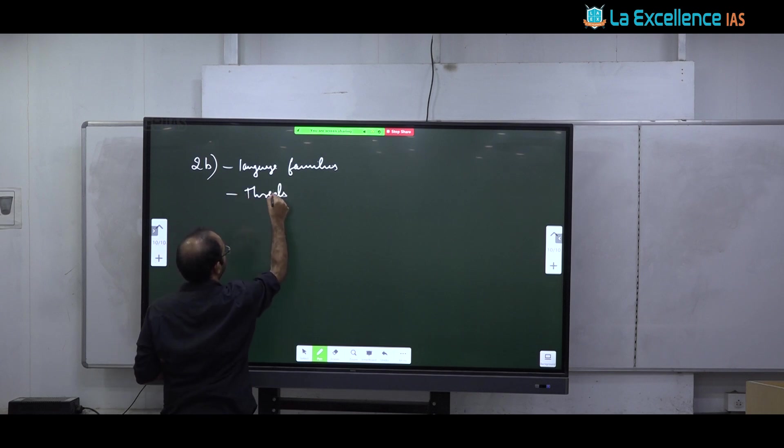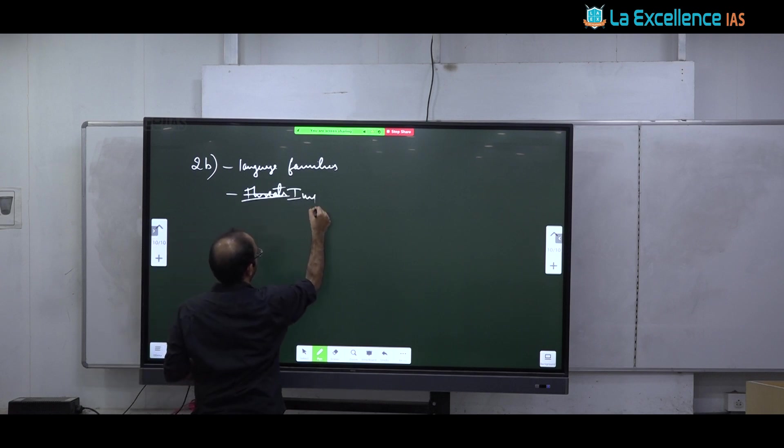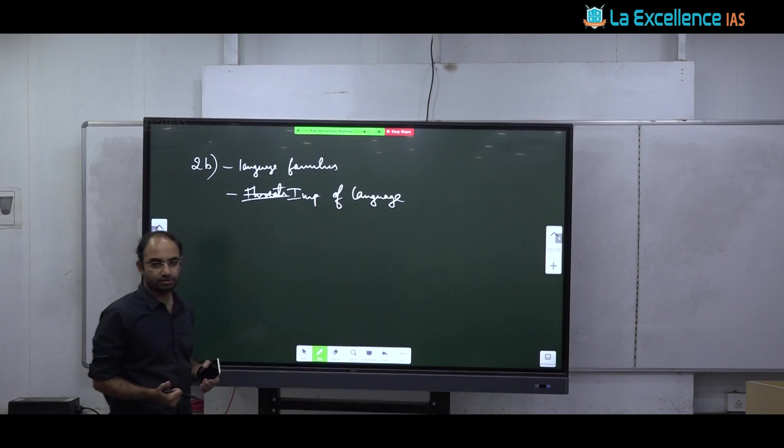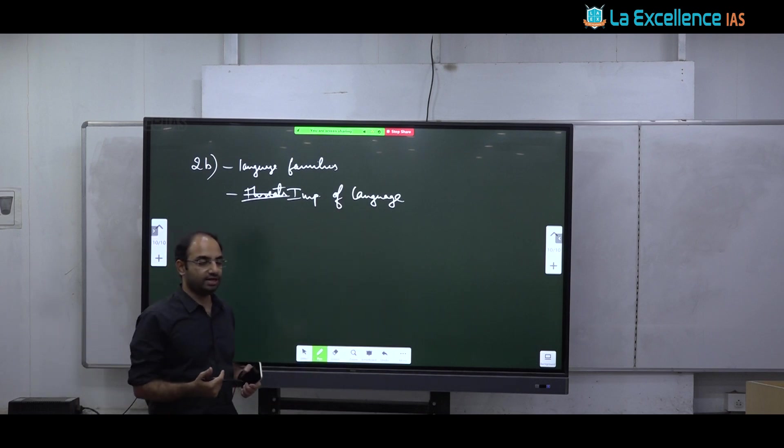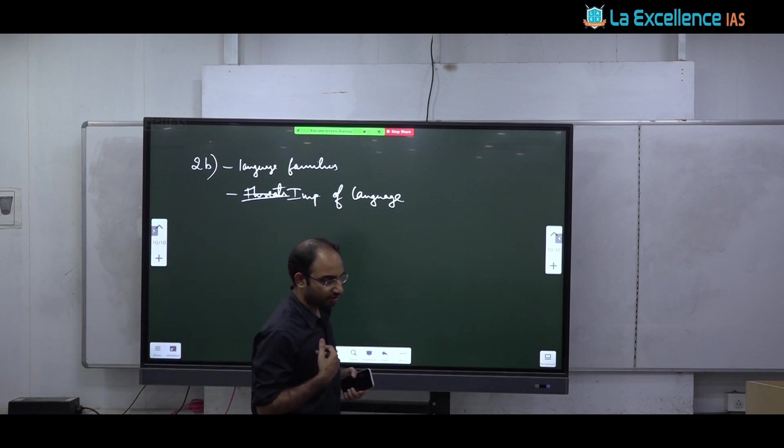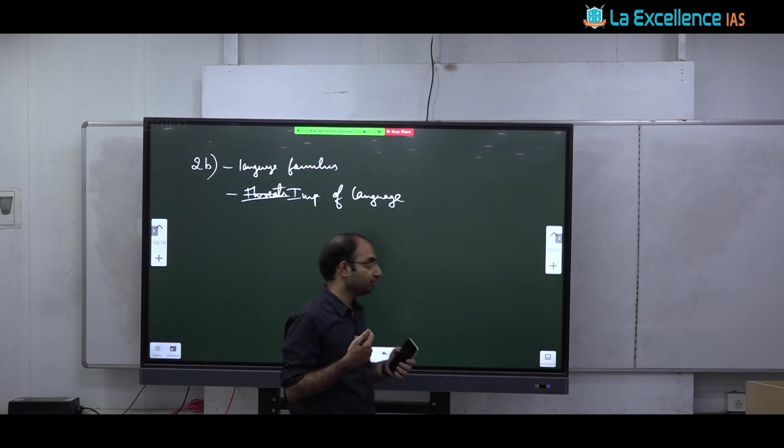2B is status of tribal languages in India. Now again to answer this, this is a very loose question. You cannot prepare and memorize answer for this. When you are writing about threat to tribal languages, first briefly describe tribal language families, backdrop, background. Next, talk about threats. What are the threats facing tribal? Next, discuss importance of language.